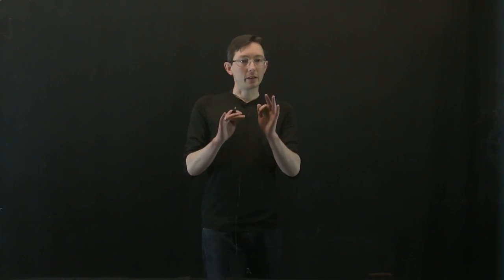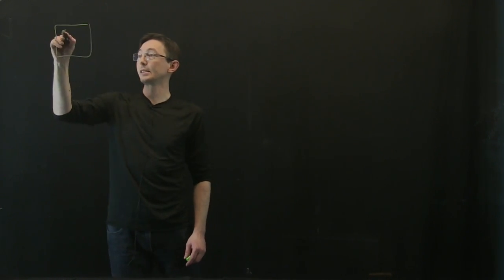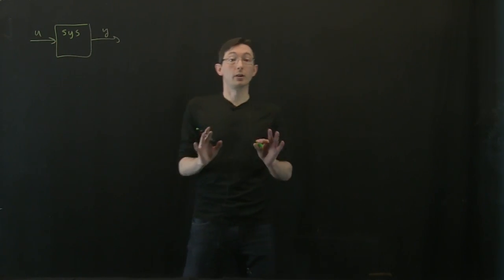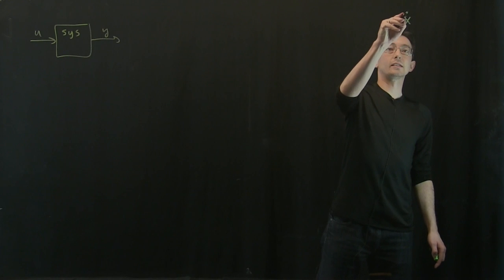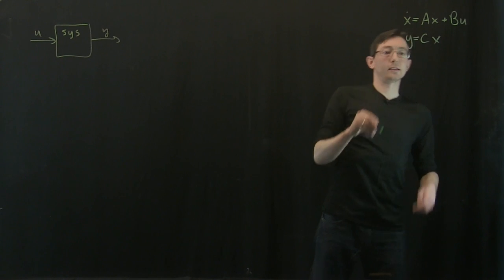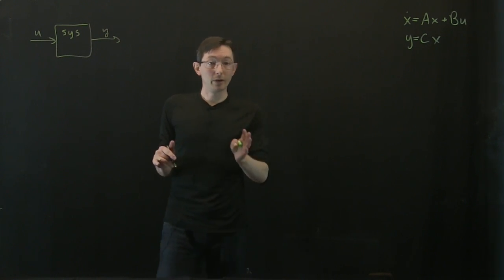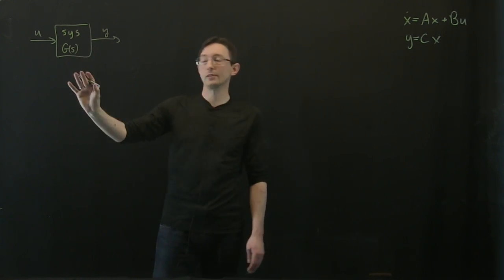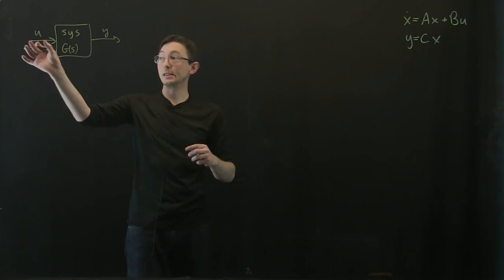Welcome back. In the last segment we were talking about how to represent a system that has inputs u and outputs y in different equivalent representations. For a linear system, you can write things as a state space system of ODEs: x-dot equals Ax plus Bu, y equals Cx, where x is the state, y are measurements, and u is the actuation. Now we're going to talk about the transfer function — this complex-valued frequency domain transfer function g of s that tells me how u maps to y in terms of frequencies.